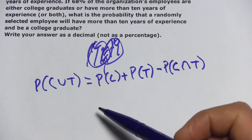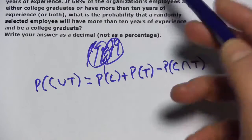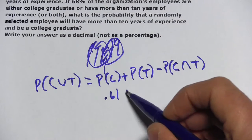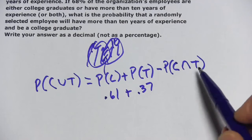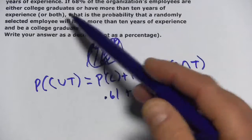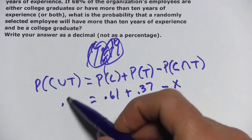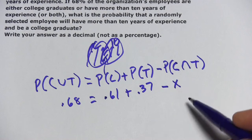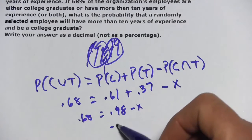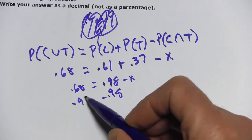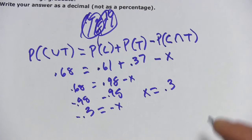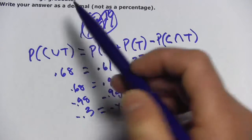We have a lot of these pieces. 61% are college graduates, so I'll put 0.61 in there. 37% have more than 10 years of experience, so I'll put 0.37. We don't know the intersection — we're looking for that, so I'll call it x. 68% are either one or the other or both, so that's the union, 0.68. Now it's a simple algebra problem: 0.98 minus x equals 0.68. Subtracting 0.98 from both sides gives negative 0.3 equals negative x, so x equals 0.3. Our probability is 0.3, or 30%.